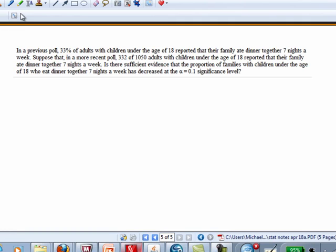In a previous poll, 33% of adults with children under the age of 18 reported that their family ate dinner together seven nights a week. Suppose that in a more recent poll, 332 of 1,050 adults with children under the age of 18 reported that their family ate dinner together seven nights a week. Is there sufficient evidence that the proportion of families with children under the age of 18 who eat dinner together seven nights a week has decreased at the alpha equals 0.1 level of significance?